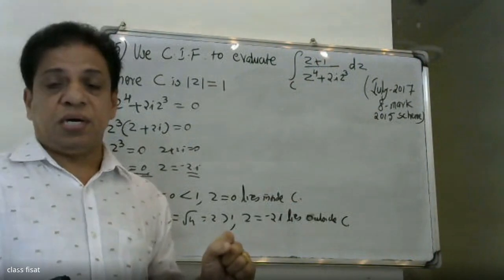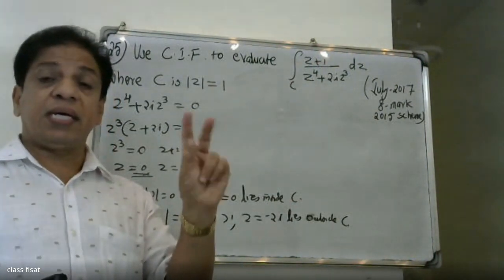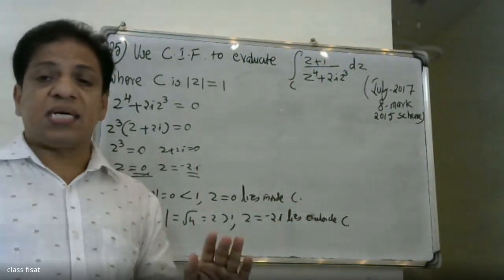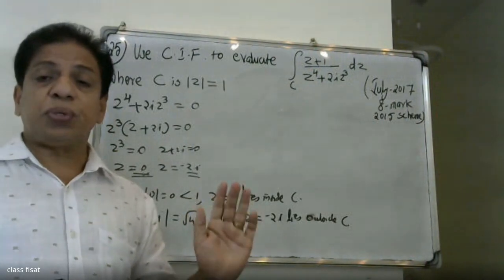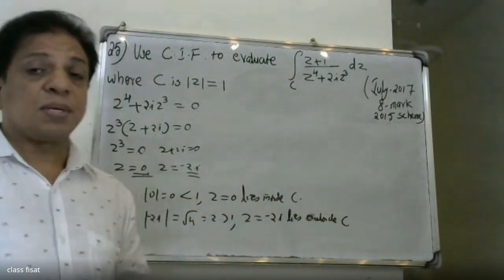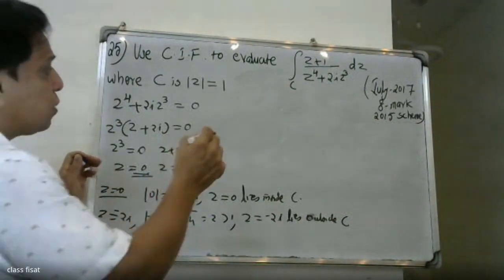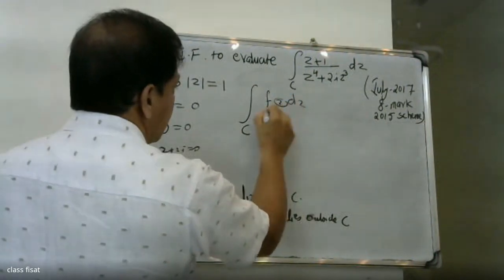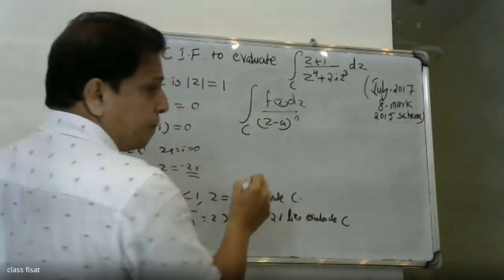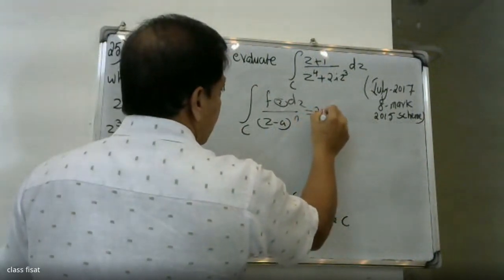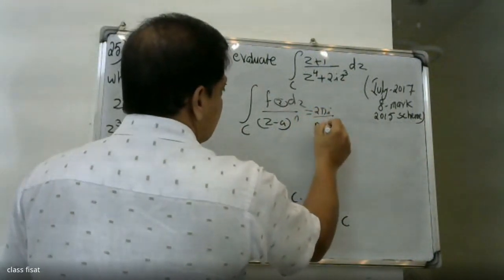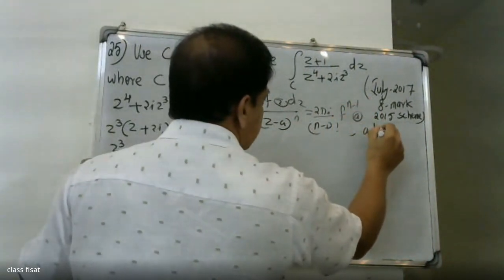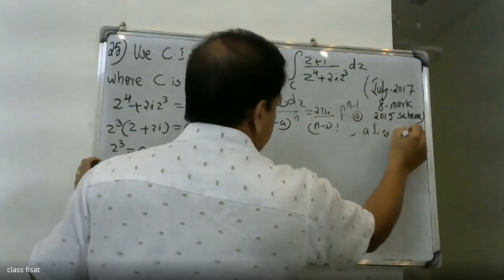To summarize the singular points: z=0 lies inside the contour C, and z=-2i lies outside. Since only z=0 is inside, we apply Cauchy's Integral Formula: ∮_C F(z) dz = (2πi)/(n−1)! · f^(n−1)(a), where a lies inside C.